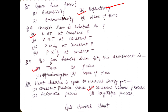Question number ten: heat absorbed is equal to internal energy for which type of process? Heat absorbed is equal to internal energy for a constant volume process. So the correct option is B for this question.